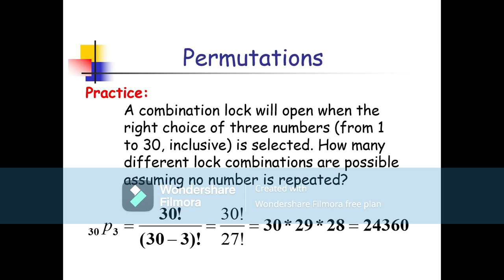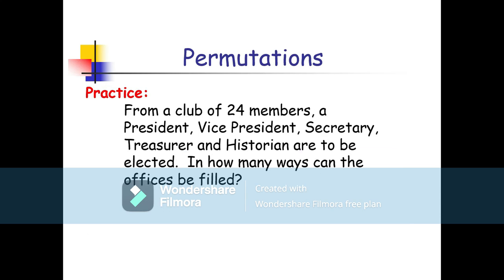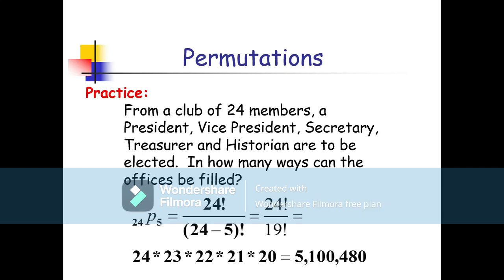From a club of 24 members, a president, vice president, secretary, and historian are to be selected. In how many ways can this be done? We have 5 positions to fill from 24 members, so we use nPr = 24P5 = 24! / (24−5)! = 24! / 19!. We expand 24×23×22×21×20, and the 19! in the denominator cancels, giving us our answer.